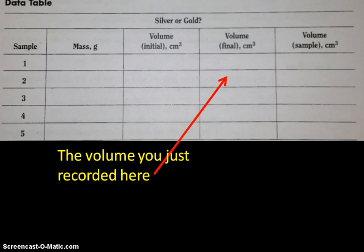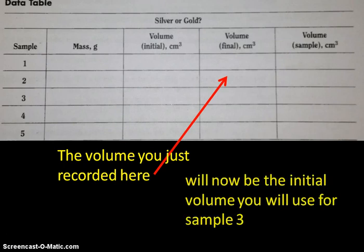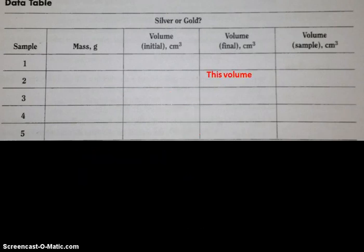The volume you just recorded here will now be the initial volume you will use for sample number three. Again, you will not pour out the water or the metal sample. So this volume will now be the new initial volume. To find the volume, you will continue that process for the rest of the samples.